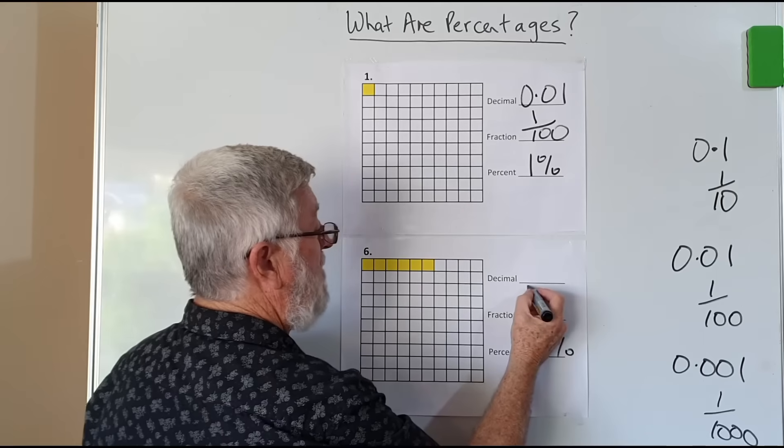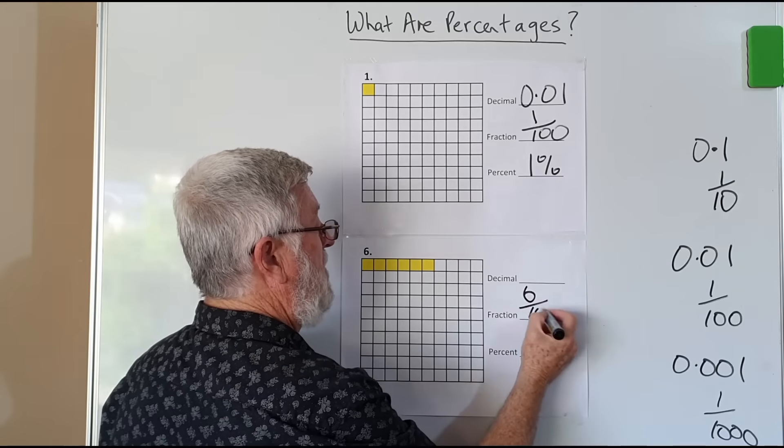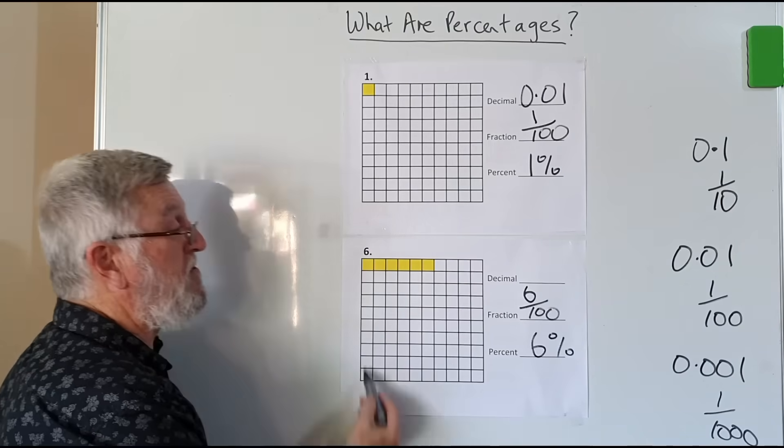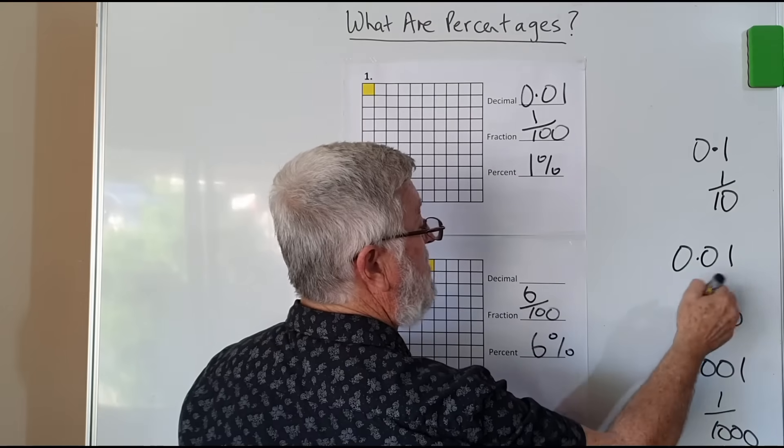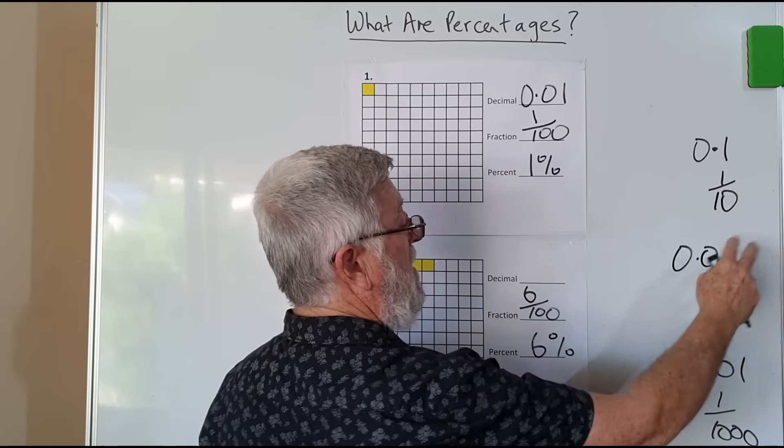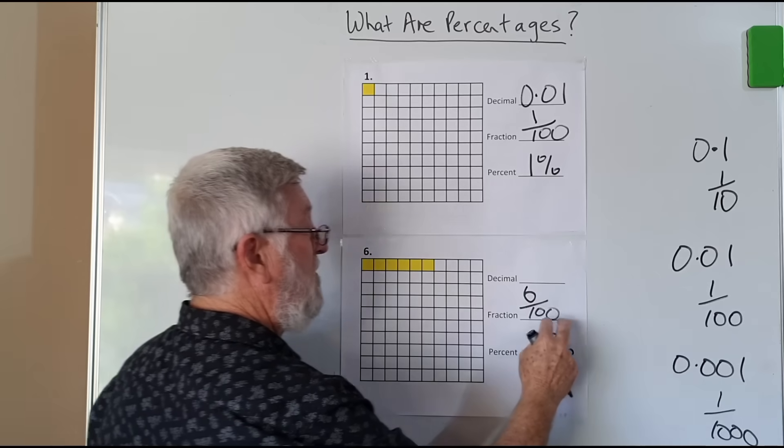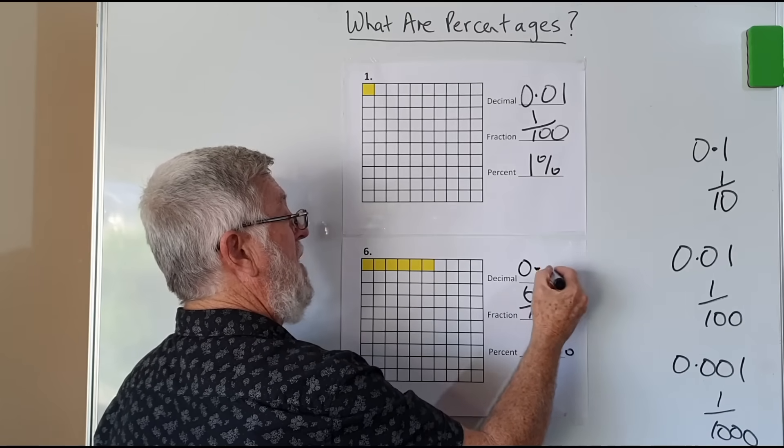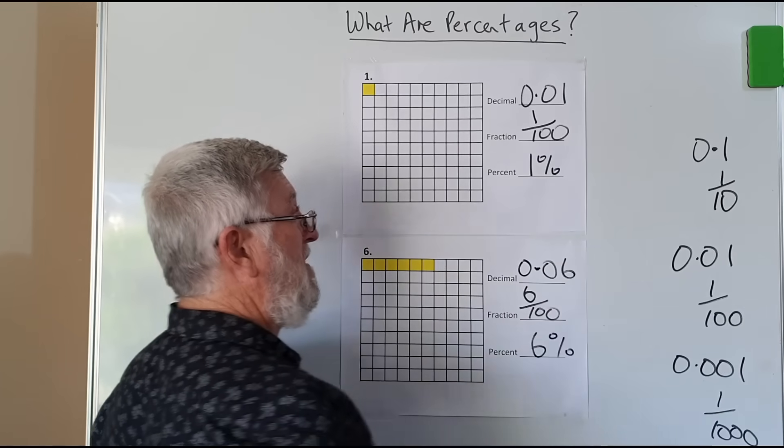If I write that as a fraction, I've got six out of a hundred. And if you looked at it here, you can see it's six out of the total number, which is a hundred. Then if I'm writing it as a decimal, two decimal places means two zeros. So two zeros means I'm going to have two decimal places, and that's the basic idea.